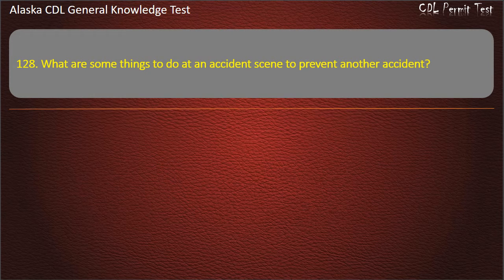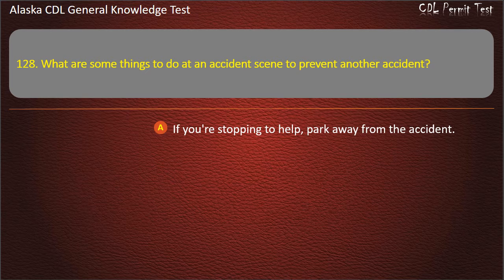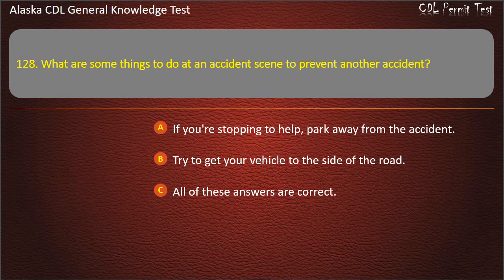Question 128. What are some things to do at an accident scene to prevent another accident? If you're stopping to help, park away from the accident; try to get your vehicle to the side of the road; or all of these answers are correct. Answer: All of these answers are correct.